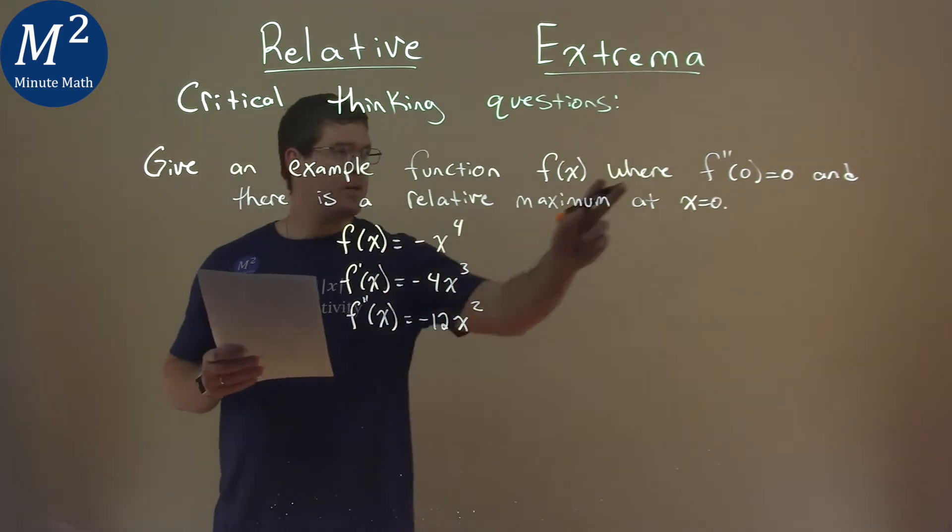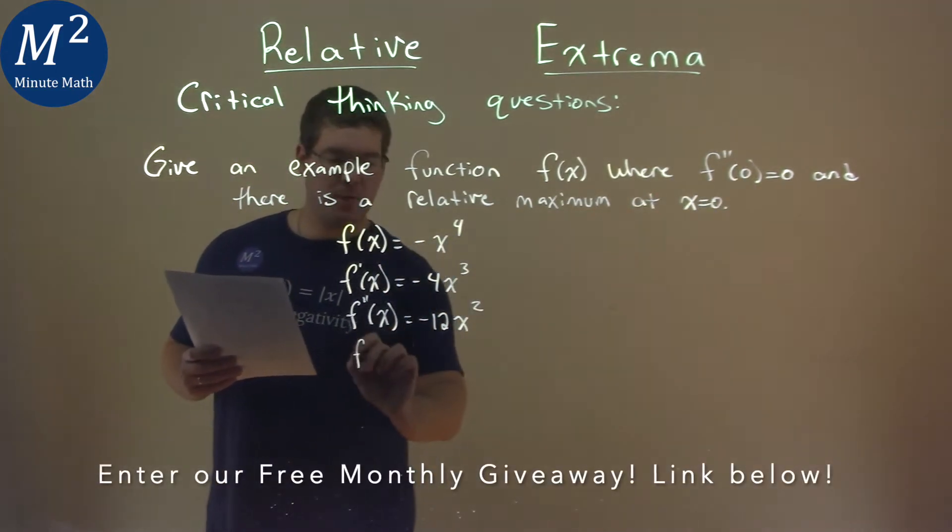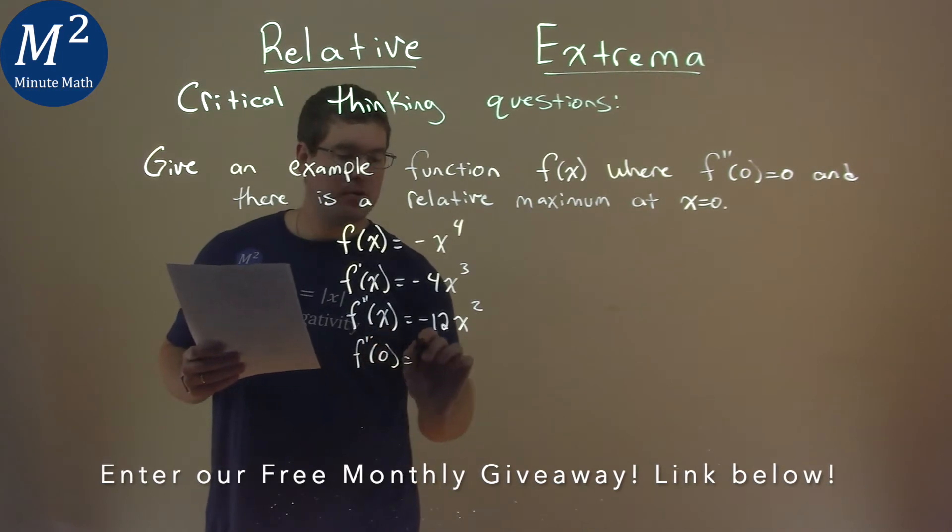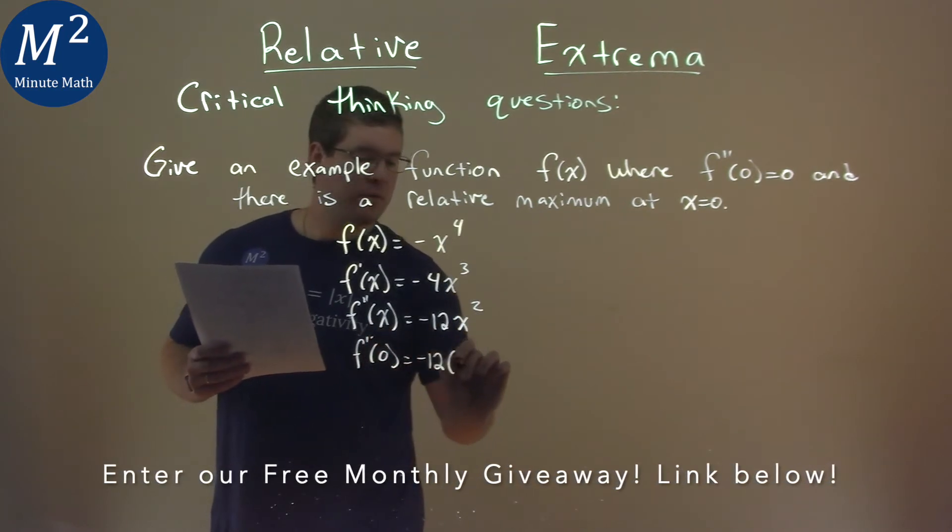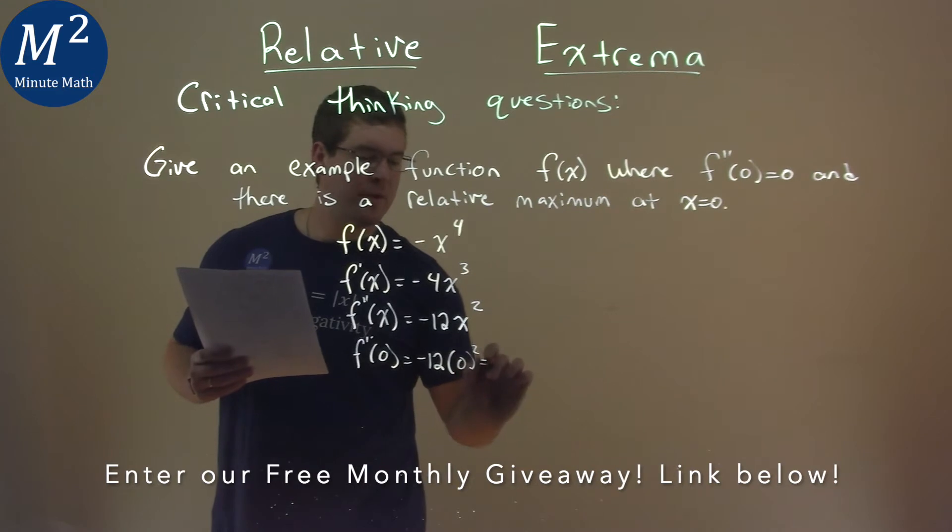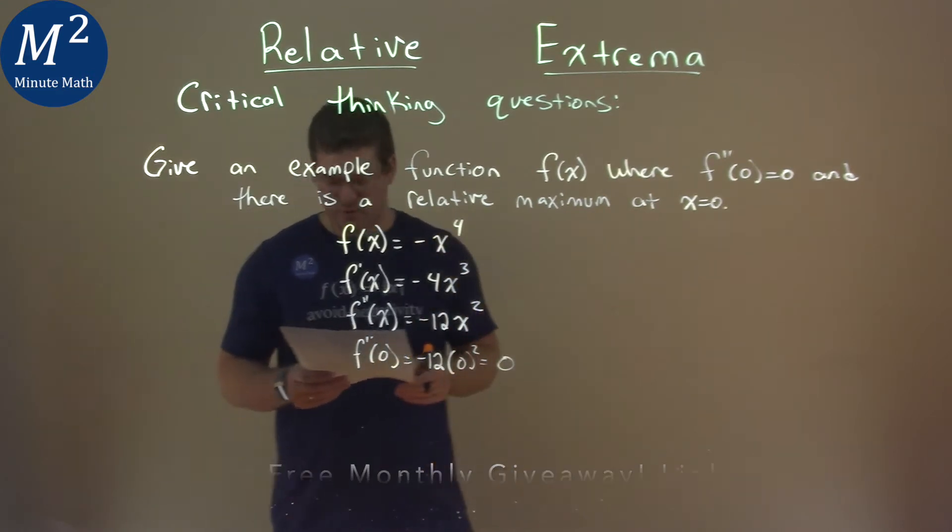From there, they said we want to find if f''(0) = 0. Well, f''(0) into our function, -12 times 0^2, it's multiplied all by zero, and that's equal to zero. We're good.